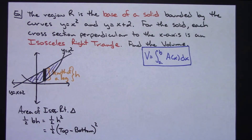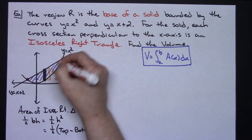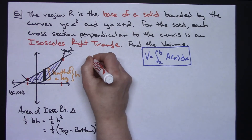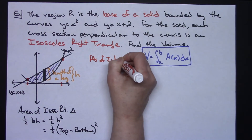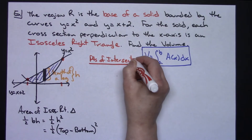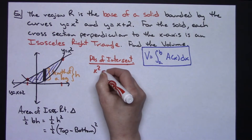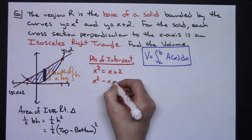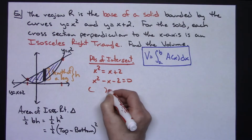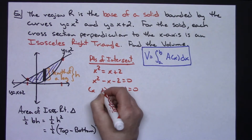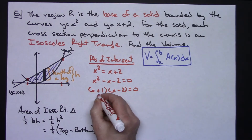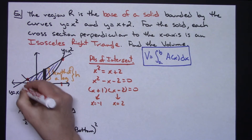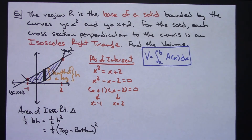I also have to find my points of intersection. I can find those by setting the two curves equal to each other. So: x squared equals x plus 2, move everything to the left — x squared minus x minus 2 equals 0 — and that factors as (x minus 2)(x plus 1), giving intersection points at x equals negative 1 and x equals 2. So now I know where I'm integrating from.